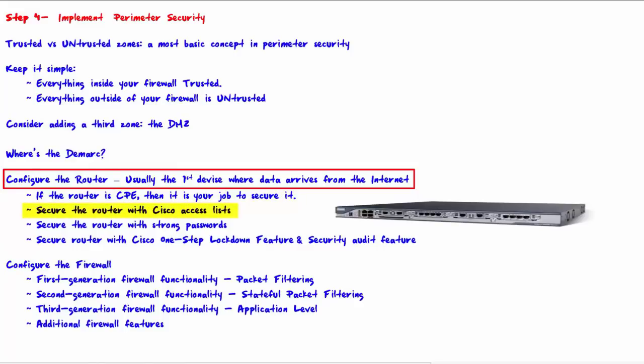Cisco access lists have both standard and extended versions. Standard ACLs filter solely based on the source IP address of the packet. Extended ACLs offer more functionality: you can filter on source IP address, destination IP address, source port, destination port, and more. You may decide what source and destination IP addresses and ports are allowed to pass the router, and enforce this with an ACL.